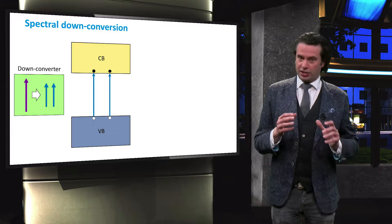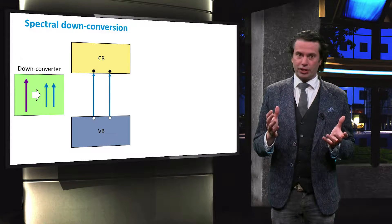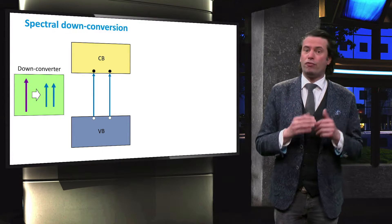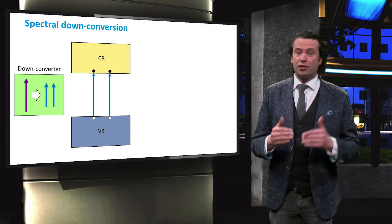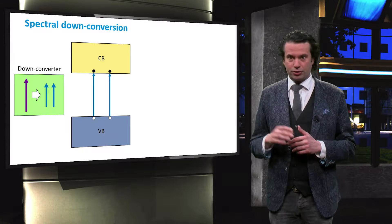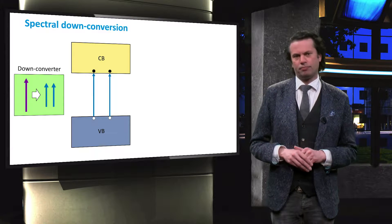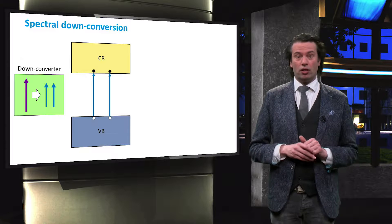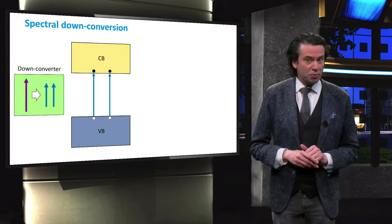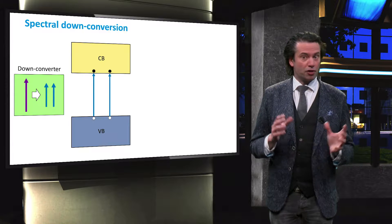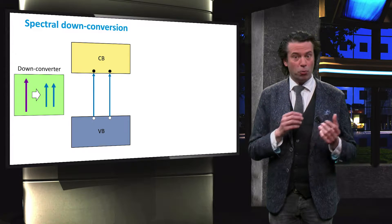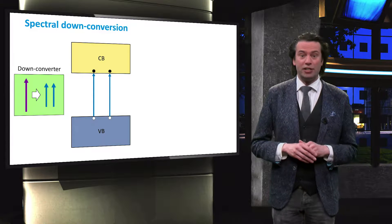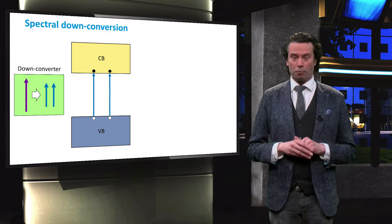If the energy of this initial photon is more than twice the band gap energy, both photons can generate an electron-hole pair. This means that the maximum theoretical external quantum efficiency of 100% at the wavelength of a blue photon can be increased to 200%.